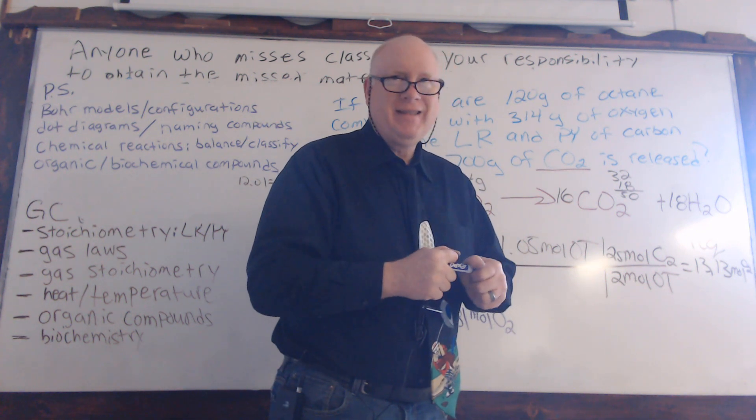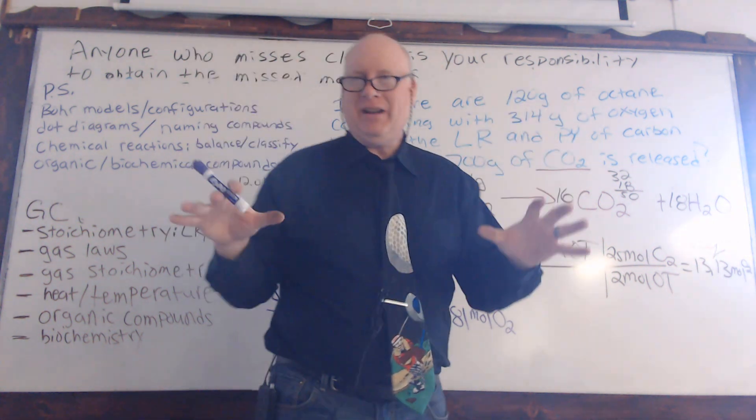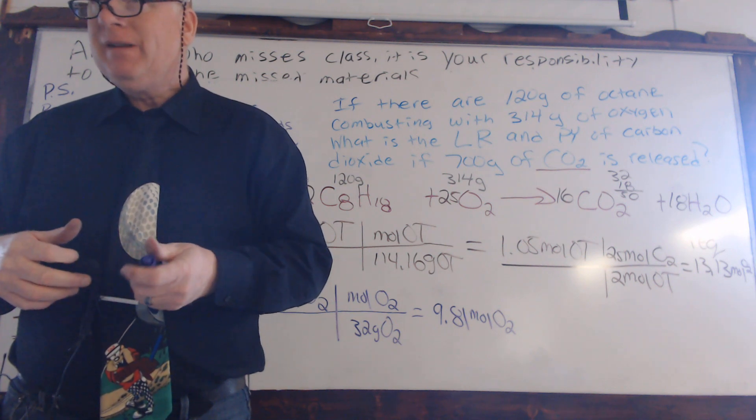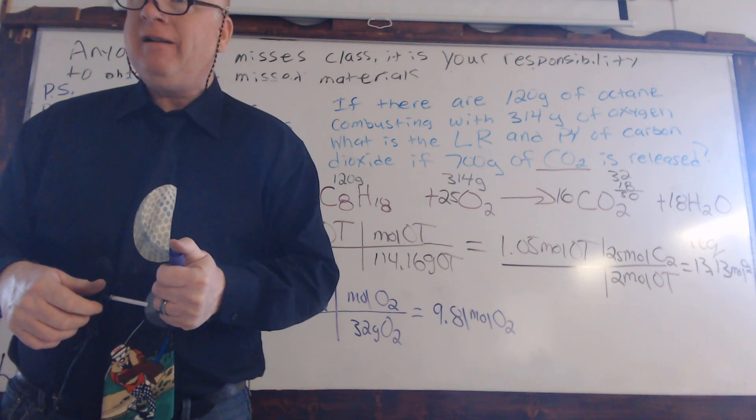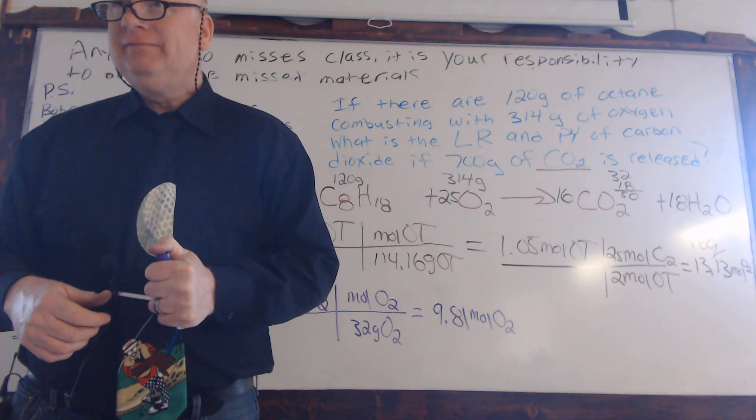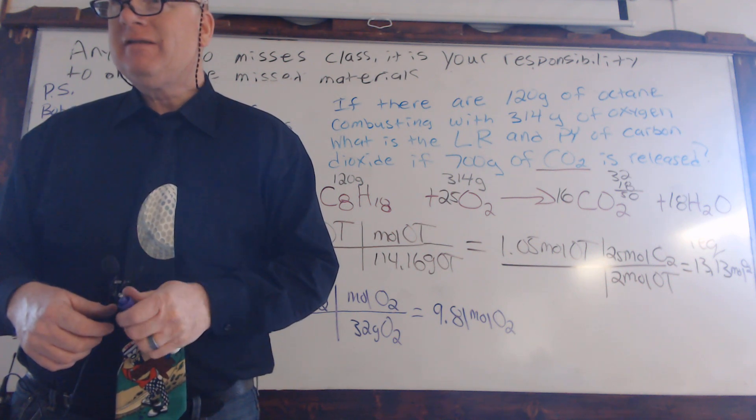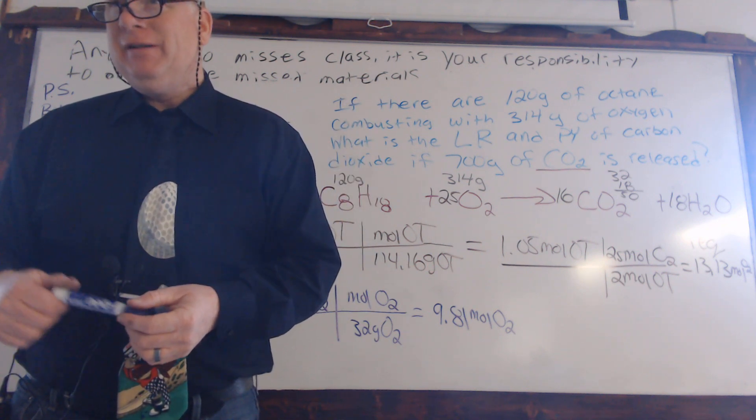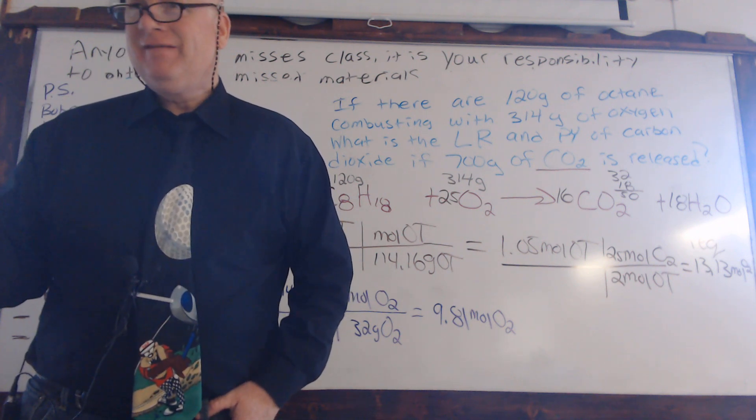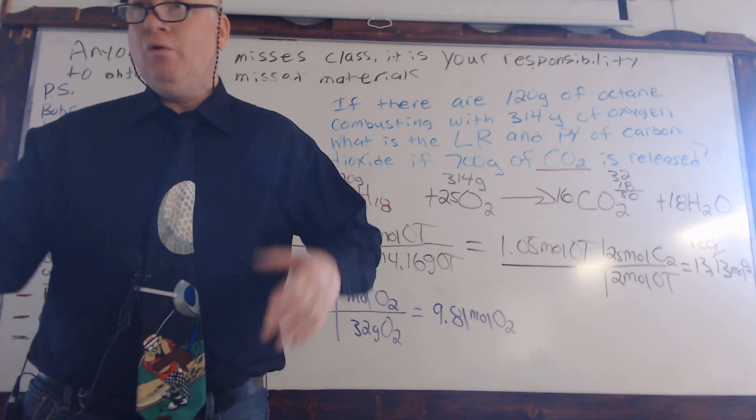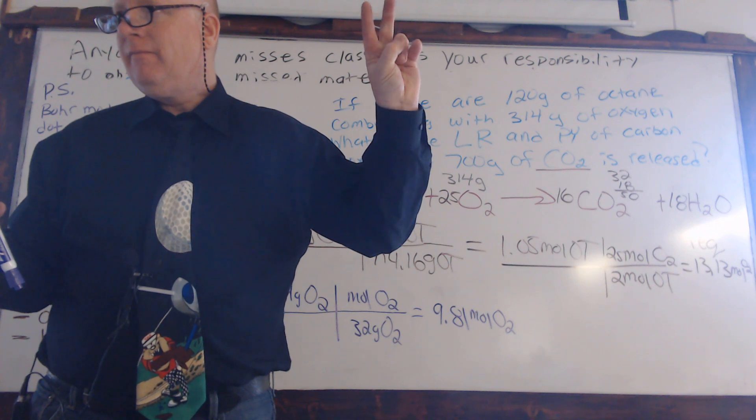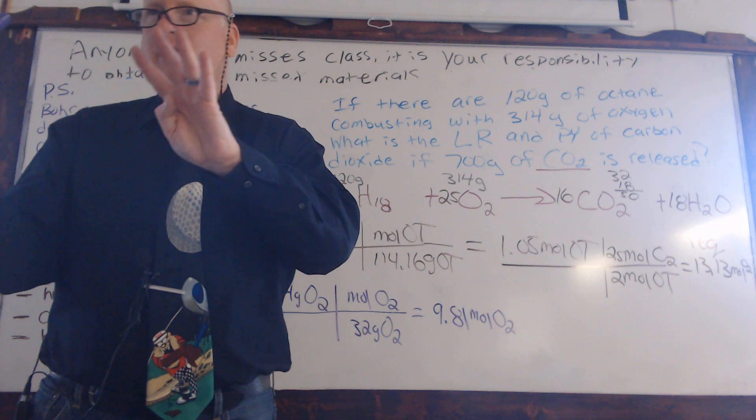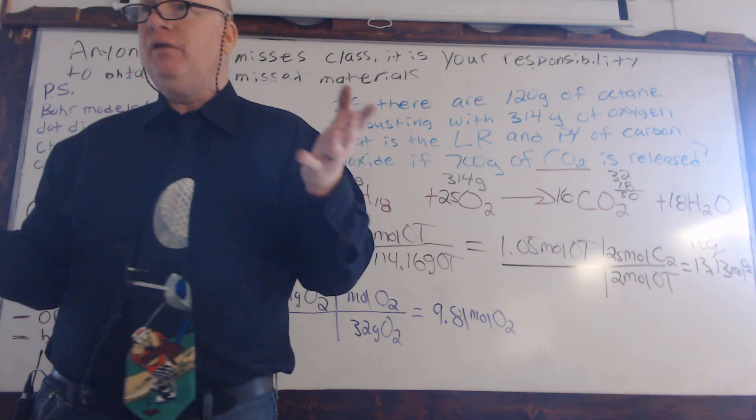So change 120 grams of octane to moles of octane. That's correct. For every mole of octane, let's see here, 12.01 times 8 is about 96, and then 18.08. Add those two together. 12.01 times 8, 96.08 I guess. Add 18.08. 114.16. And again, that's just the atomic mass of that put together. Are we doing anything with this equation, with these coefficients? Of course not. We're not quite that far yet.